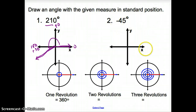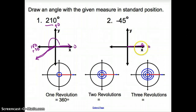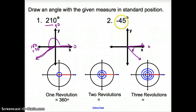We can also go backwards. If we start at 0, we draw our initial side at the origin on the positive x-axis. Then if we just go down 45 degrees — that's about half of 90 — I go down 45, just about like so. And now I have my negative 45 degrees.